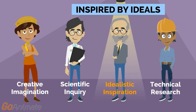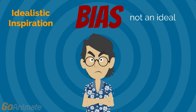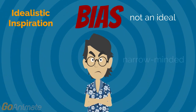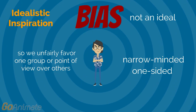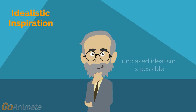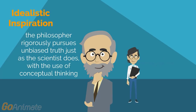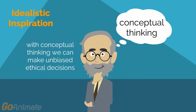With idealistic inspiration we are inspired by our ideals. Personal bias is not an ideal. Bias makes us narrow-minded and one-sided, so we unfairly favor one group or point of view over others. Unbiased idealism is possible. The philosopher rigorously pursues unbiased truth just as the scientist does, with the use of conceptual thinking. With conceptual thinking we can make unbiased ethical decisions.